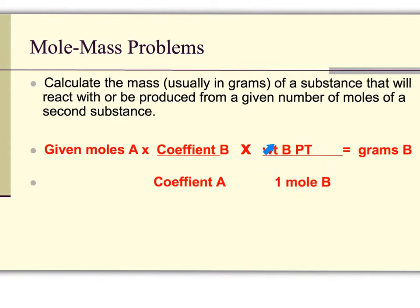This is a conversion factor. This allows moles of A to cancel out, moles of B to cancel out, leaving us grams of chemical B.